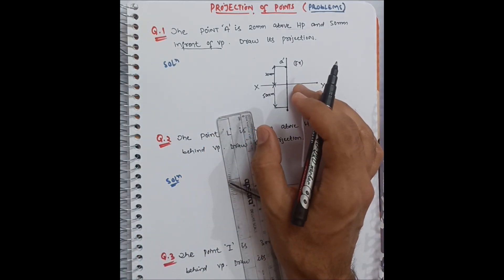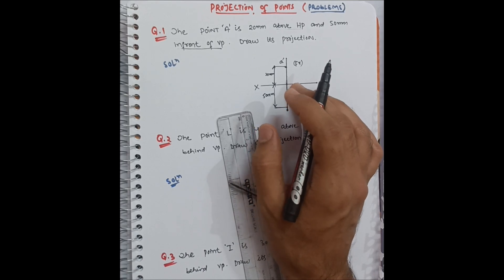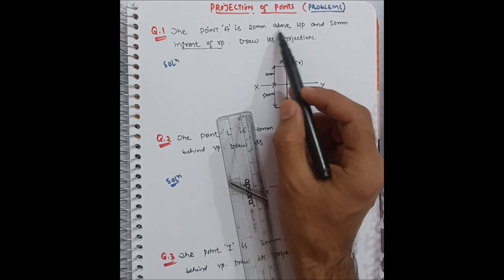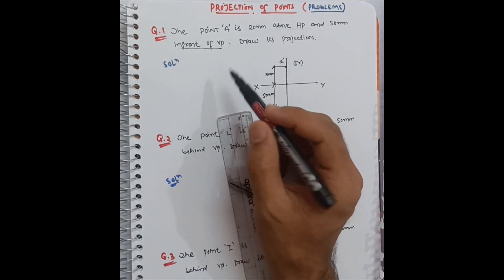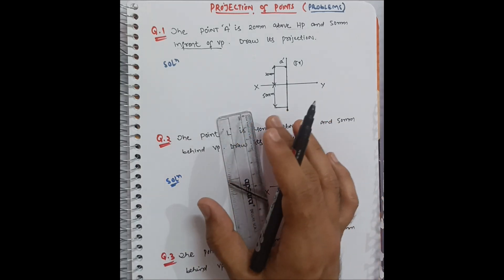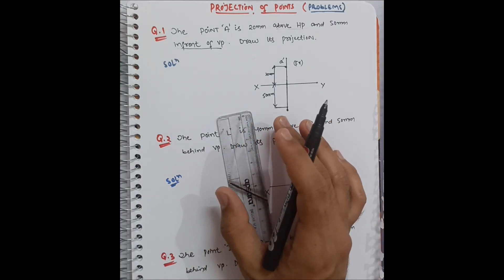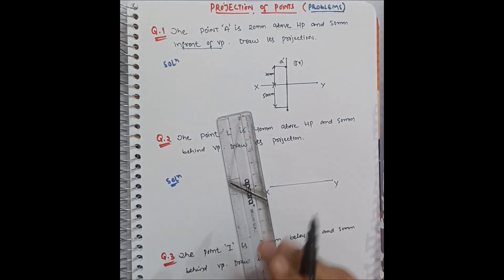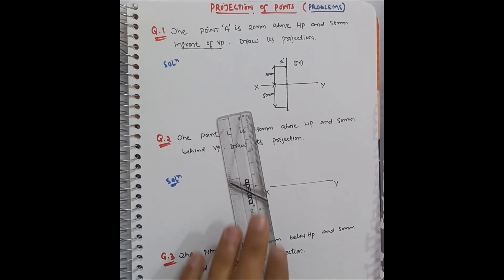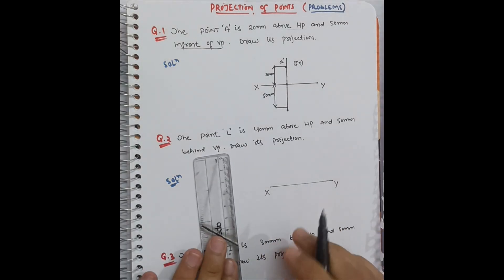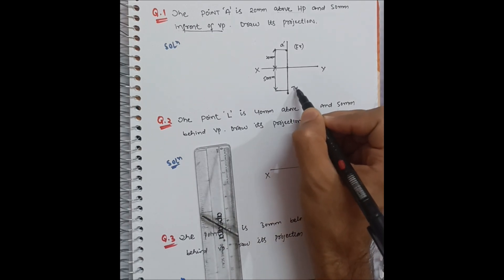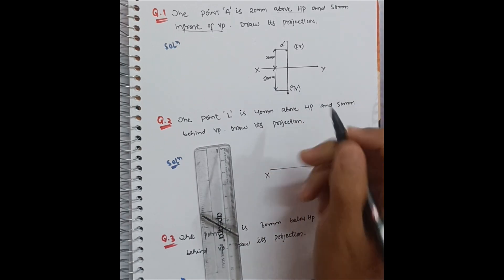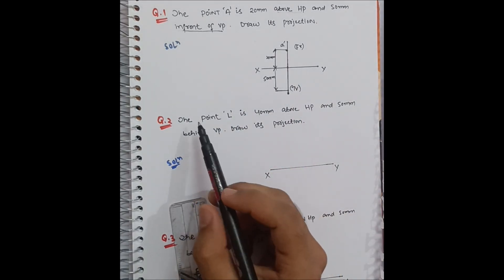This is a simple concept — just remember 'above HP' and 'in front of VP', identify which quadrant it lies in, and know where the top view and front view are placed. This completes the first problem. Now the second question.